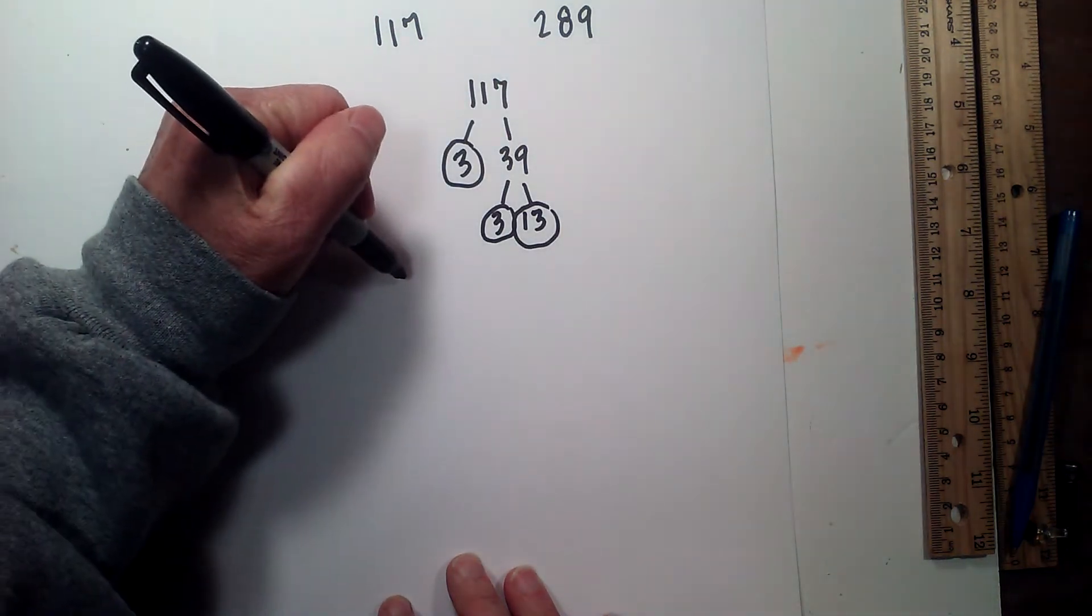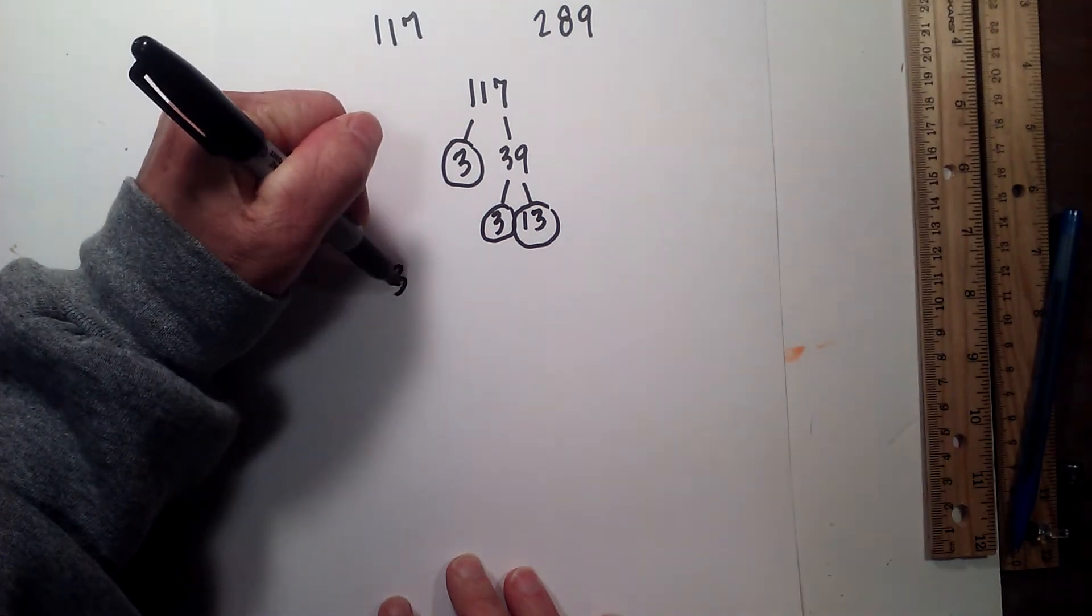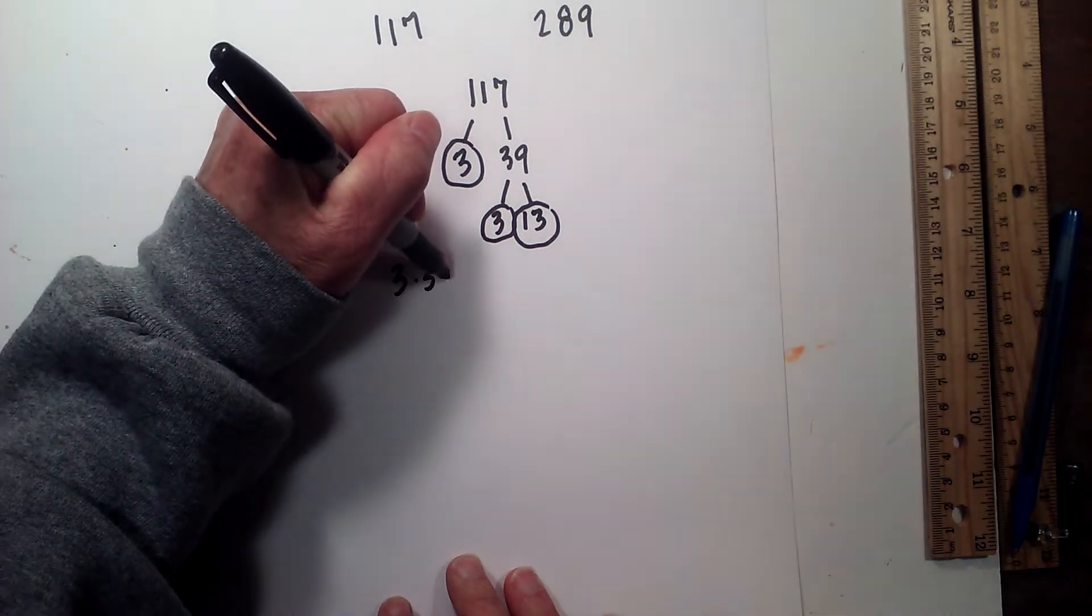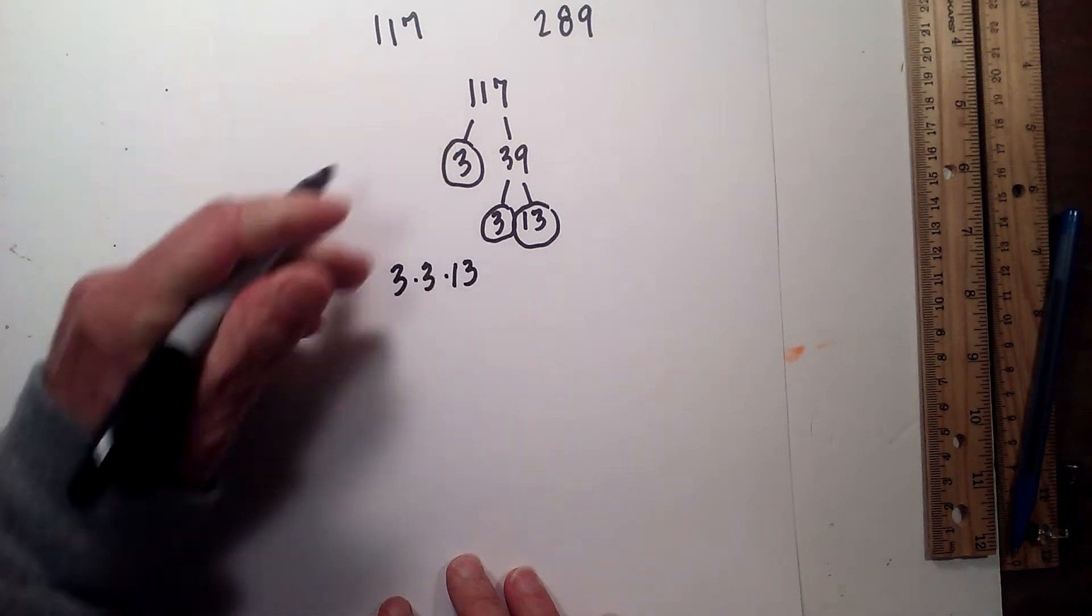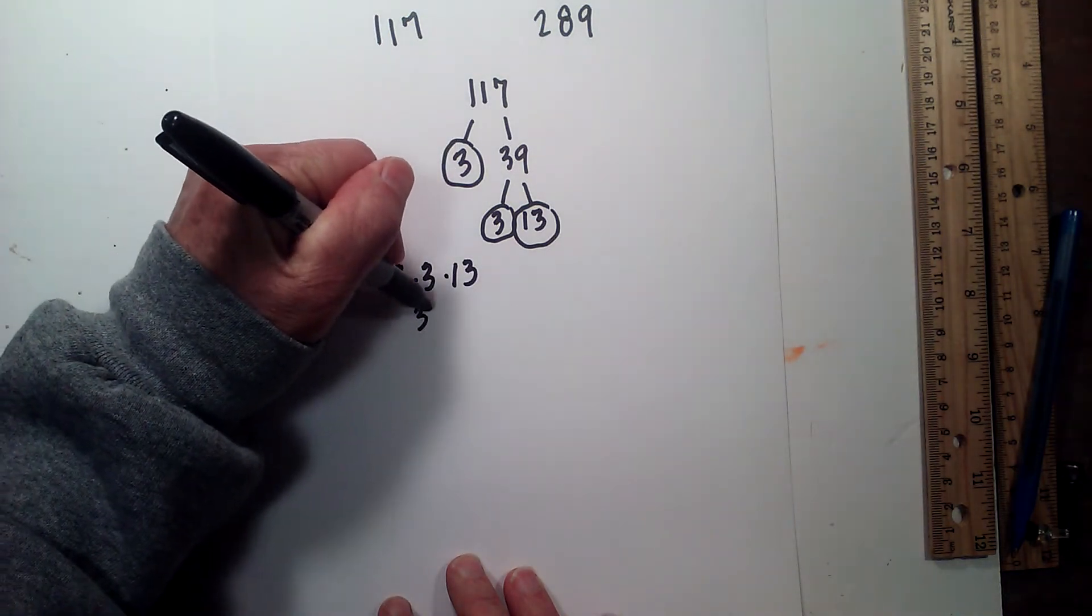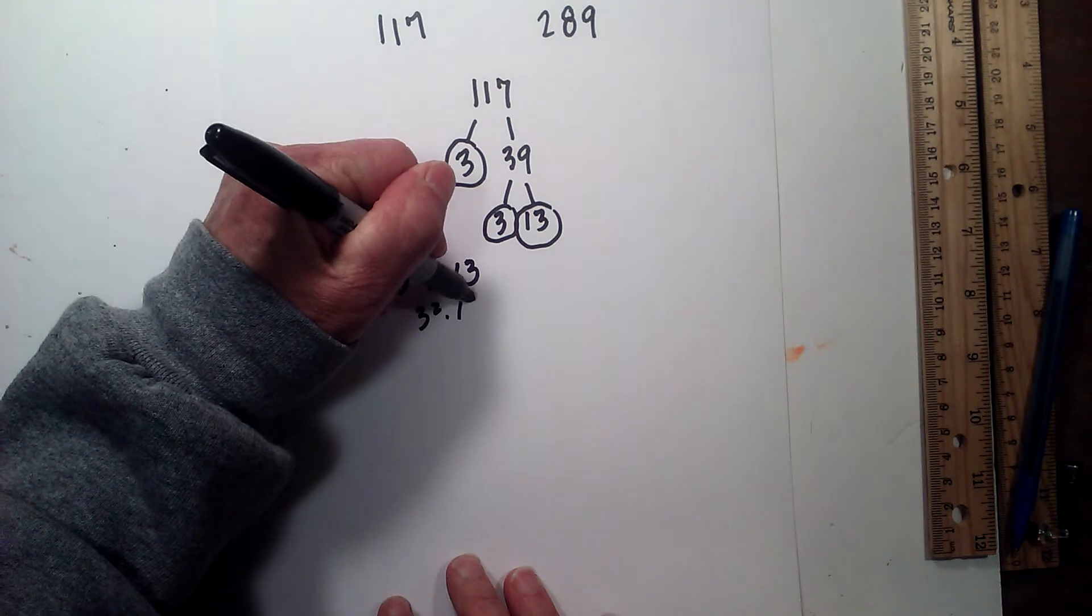So the prime factorization of 117 is 3 times 3 times 13, or you could write it as 3 squared times 13.